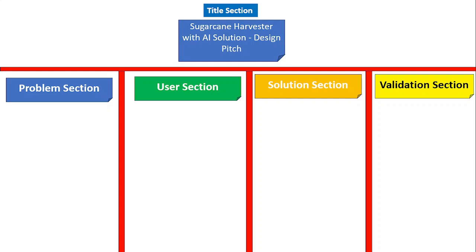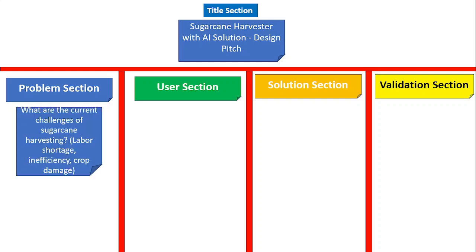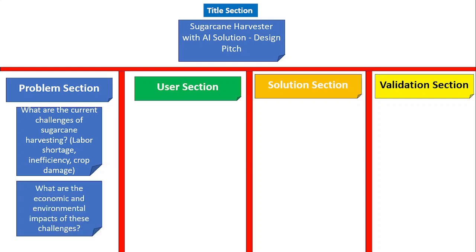For example, the title given is 'Sugar Cane Harvester with AI Solution Design Pitch.' In the problem section, attach a sticky note exploring current challenges of sugar cane harvesting — such as labor shortage, inefficiency of harvester, and crop damage during harvesting. Also list the economic and environmental impacts of these challenges. You may analyze pitch development with sticky notes on the whiteboard.